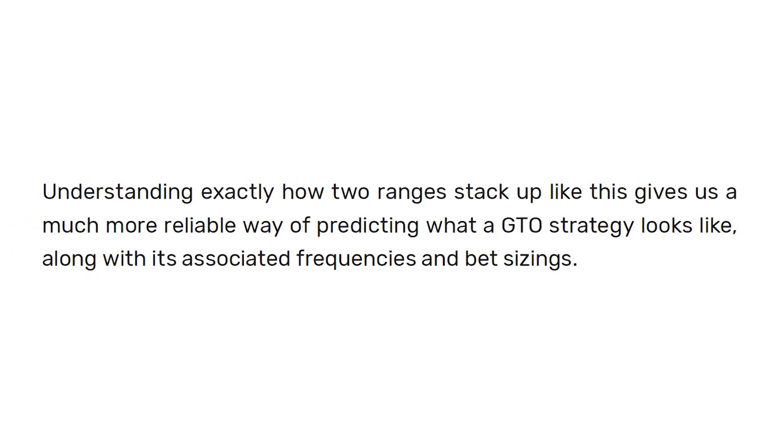And for what it's worth, it is totally possible that one person could have the nutted equity distribution, but the other person is actually doing far better because they have a deeper advantage deeper in the ranges. It's very important to understand exactly how two ranges stack up, because this gives us a more reliable way of predicting what a GTO strategy is going to look like, along with the associated frequencies and also bet sizes. The big takeaway is: one, be able to define range advantage more clearly and not just look at raw pot equity as the only definer of which range has range advantage. Think about ranges at different intervals — looking at buckets like the top, middle, and bottom — understand what a nutted equity distribution looks like, and look at the holistic picture overall rather than one singular piece when comparing ranges.